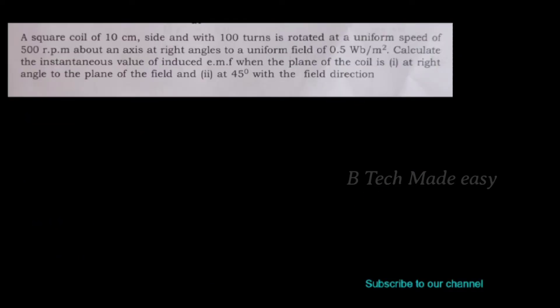A square coil of 10 cm with 100 turns is rotated at a uniform speed of 500 RPM about an axis at right angles to a uniform field of 0.5 Weber per metre squared. Calculate the instantaneous value of the induced EMF when the plane of the coil is at right angles to the field, and when the coil is at 45 degrees to the field direction.